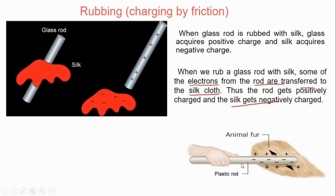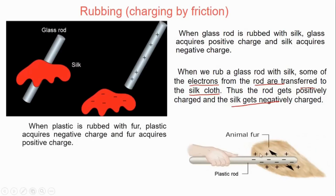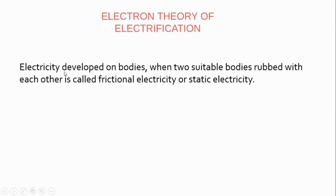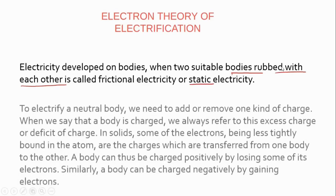Similarly, if we rub animal fur against a plastic rod, animal fur will gain a positive charge and the plastic rod will gain a negative charge. Why does animal fur become positively charged? Because it has donated or transferred some of its electrons to the plastic rod. Thus, the plastic rod which accepts the electrons becomes negatively charged, and the animal fur which donated the electrons becomes positively charged. The explanation of this static electricity is the electron theory of electrification — that electricity developed on bodies when two suitable bodies are rubbed with each other is called frictional electricity.